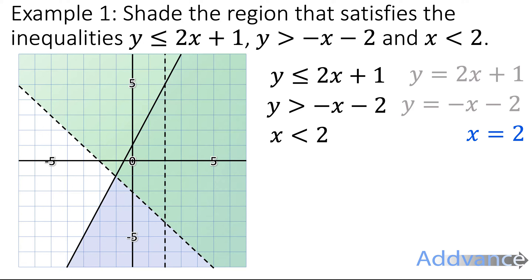And where is it less than? Well, it's on this side. Because it's less than, it's going more negative. So we have these three lines graphed on our graph and we're going to shade the inequalities.